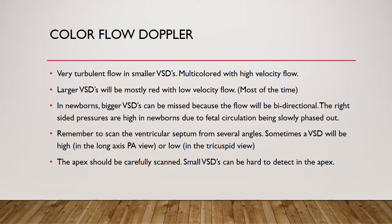Color flow Doppler — I call it the godsend of echo — because before color flow, finding a VSD was pretty hard. Very turbulent flow in smaller VSDs is multicolored with high-velocity flow. Larger VSDs will be mostly red with low-velocity flow. In newborns, bigger VSDs can be missed because the flow will be bi-directional — right-sided pressures are high in newborns due to fetal circulation being slowly phased out. About 90–99% of the time you're going to see a left-to-right shunt; it's just that the velocity may not be as high.